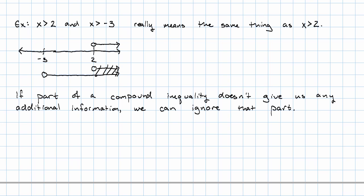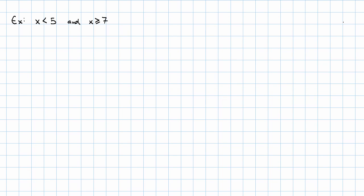One other thing that we see with these AND inequalities. It's a little bit weird, but let me show you. We might end up with an inequality that says x is less than 5 and x is greater than or equal to 7. Again, I'm just marking the numbers 5 and 7 on my number line, because I'm not interested in any other numbers. So, x is less than 5.